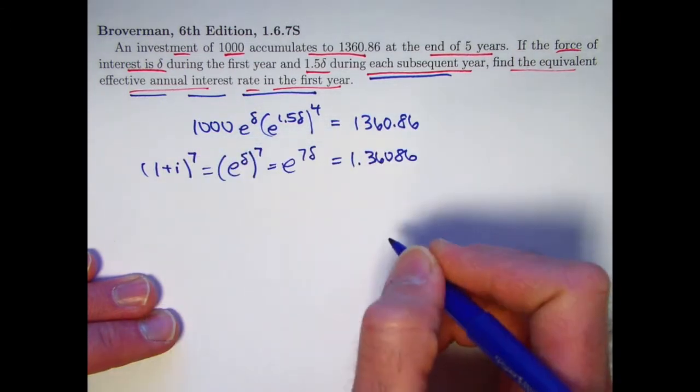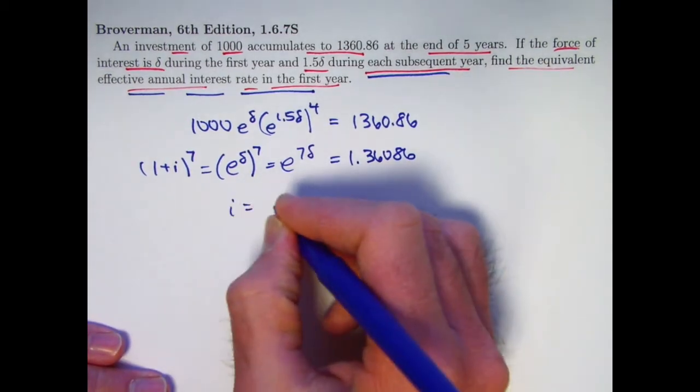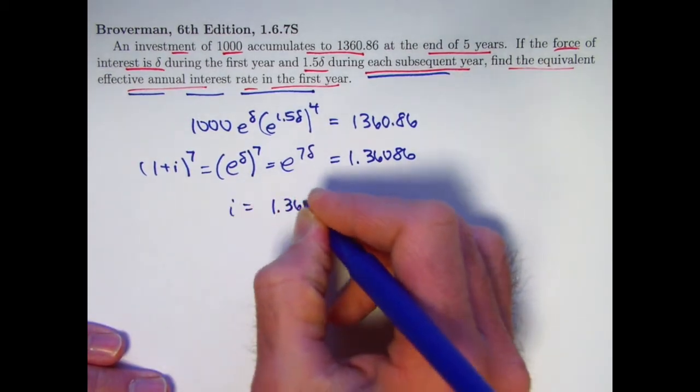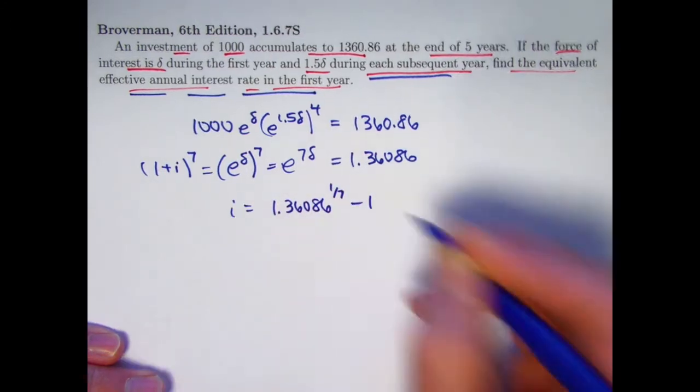So we can just take the 7th root of both sides of this equation and then subtract 1. i is going to be 1.36086 to the 1 7th power and then subtract 1.